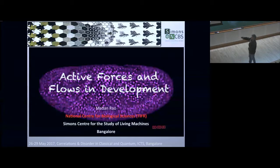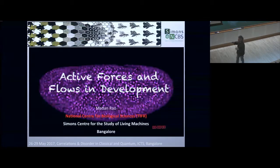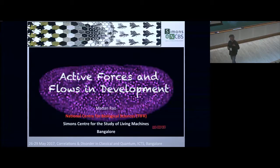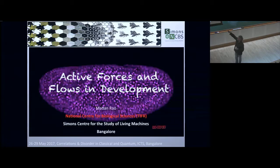I'll be talking about biology, which is very different from what we've discussed so far, but it has some connections with what Bulbul talked about, so I'll try to connect the two interests of Krishnamurti and Chandan. The story of development of an organism starts with a single fertilized cell which goes on to make two cells, four cells, and so on, until finally you see the emergence of an organism.